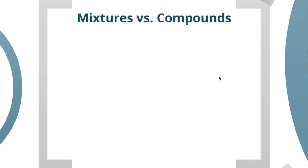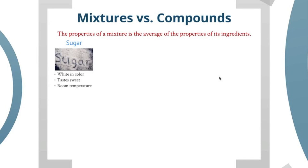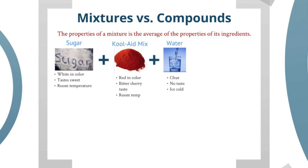Now, I'm going to compare mixtures versus compounds. The properties of a mixture is the average of the properties of its ingredients. Let me show you what I mean. Say we had sugar. Sugar is white, tastes really sweet, and in this case, it's about room temperature. Now, if I mix in Kool-Aid mix, that's going to be red in color, and it has a really bitter cherry taste, and its temperature is at room temperature.